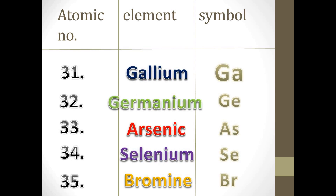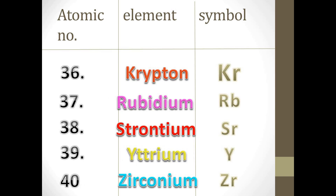The 31st element is Gallium and its symbol is Ga. The 32nd element is Germanium and its symbol is Ge. The 33rd element is Arsenic and its symbol is As. The 34th element is Selenium and its symbol is Se. The 35th element is Bromine and its symbol is Br. The 36th element is Krypton and its symbol is Kr.